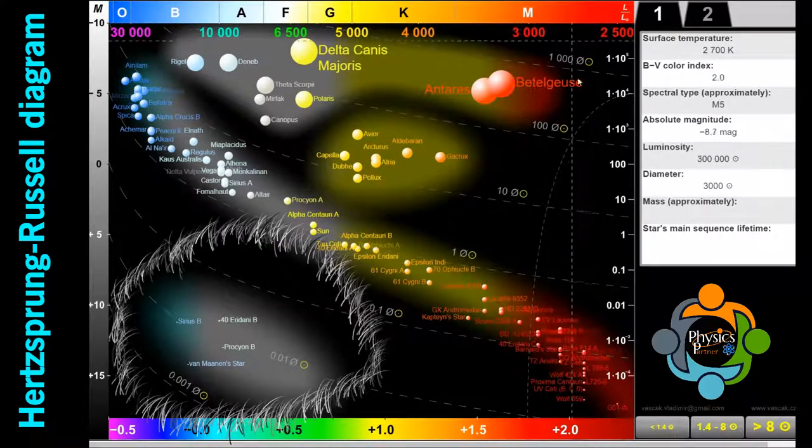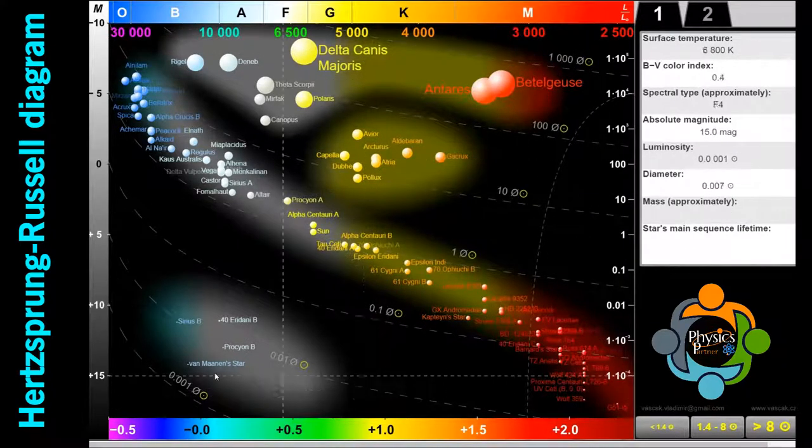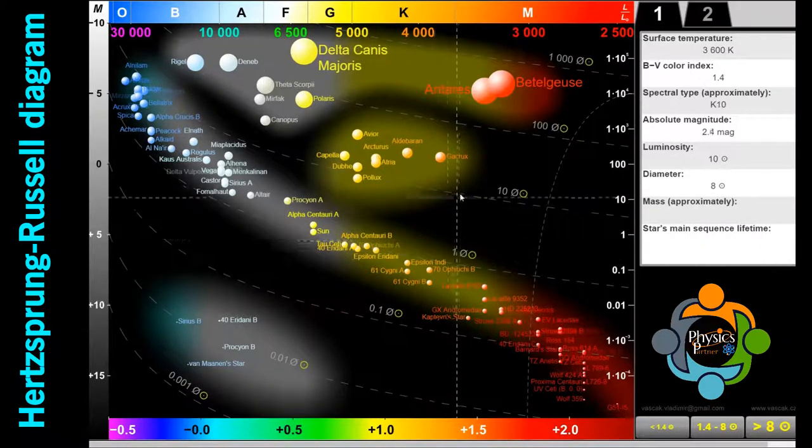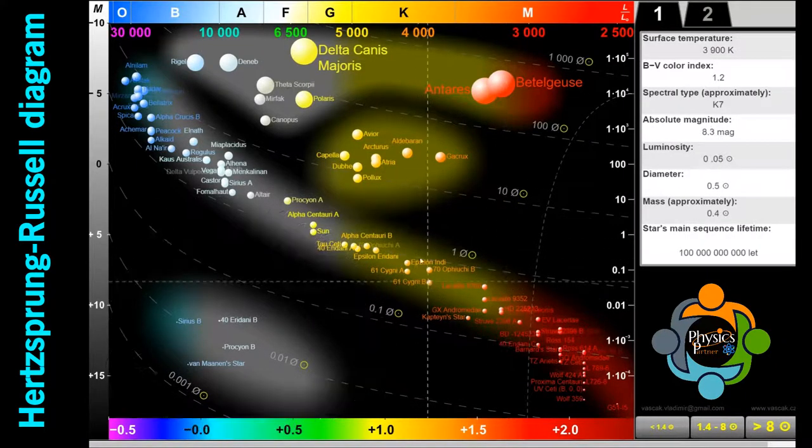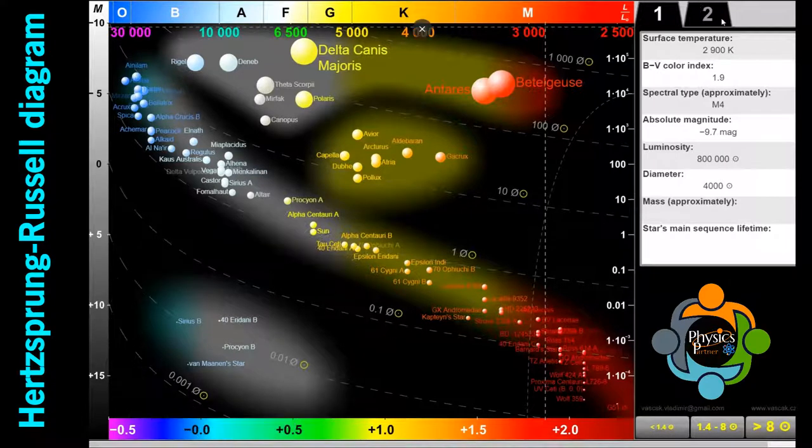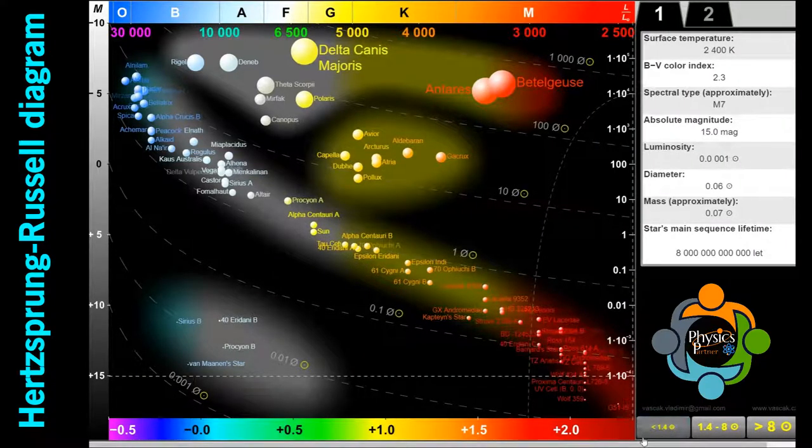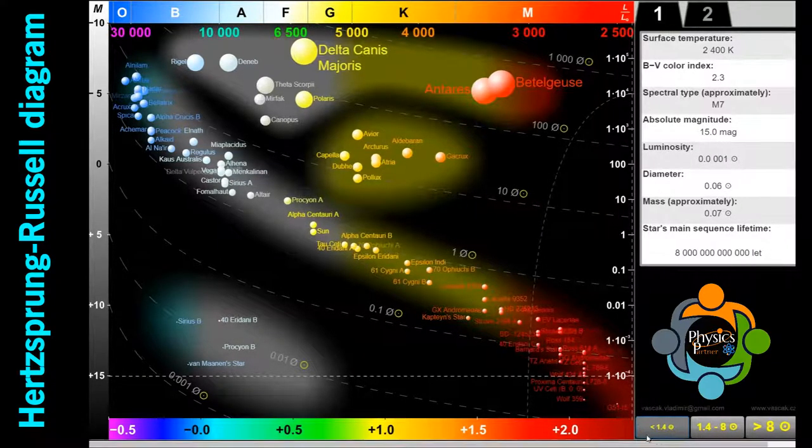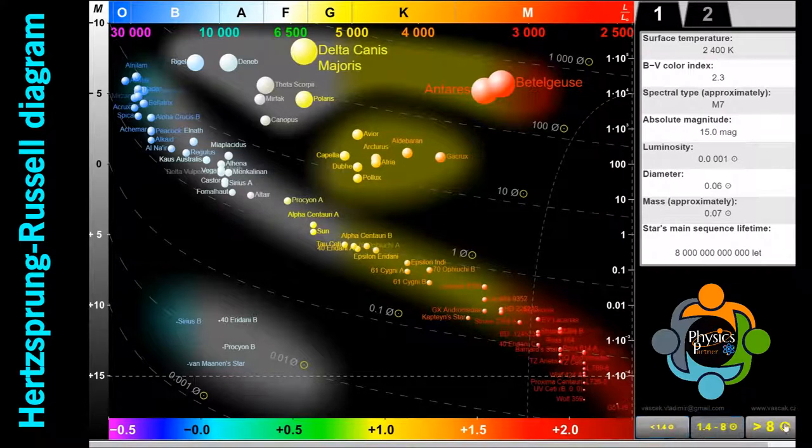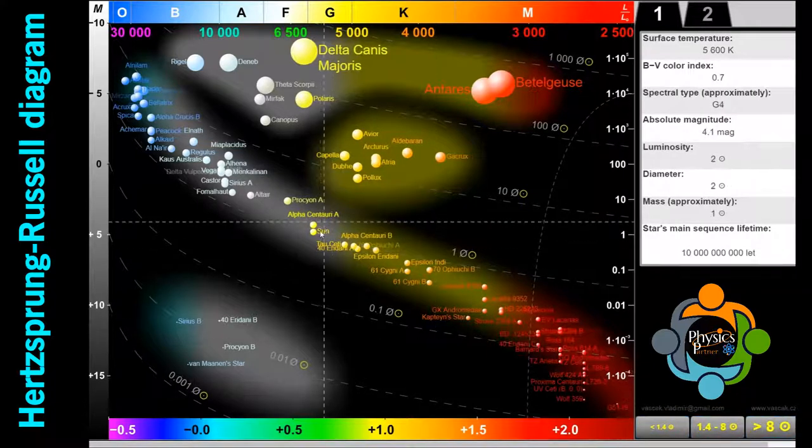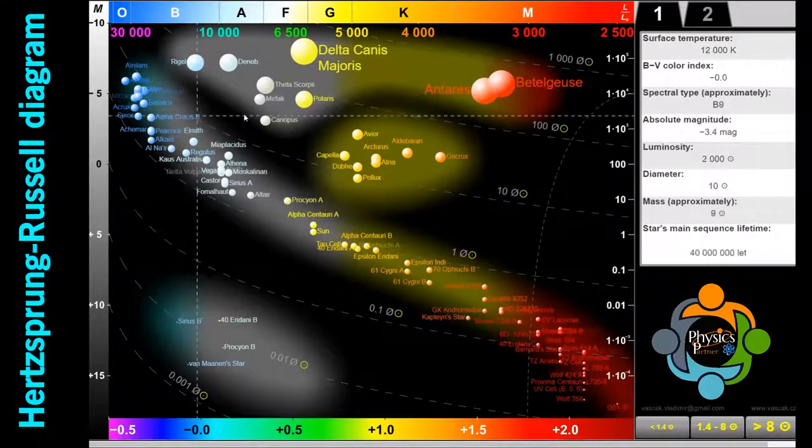Region number three: white dwarfs. White dwarf stars, luminosity class D, are the final evolutionary stage of low to intermediate mass stars and are found in the bottom left of the HR diagram. You can see here on the screen these stars are very hot but have low luminosities due to their small sizes.